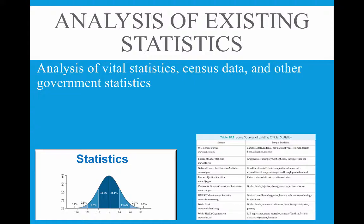When it comes to analysis of existing statistics, you get raw data from sources like vital statistics, census data, or governmental records and use it to answer your research questions by inputting it into a program like SPSS and running tests depending on your unit of analysis and research question. This is the primary method of demography — the study of the structure and changes in human populations. Demographers examine the size, composition, and geographical distribution of populations using statistics on birth, death, marriage, illness, and migration.